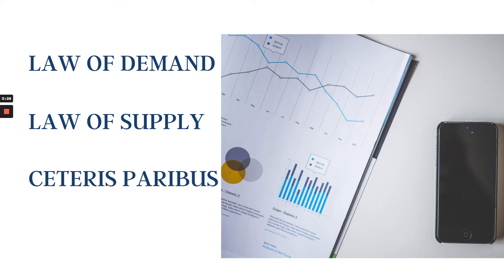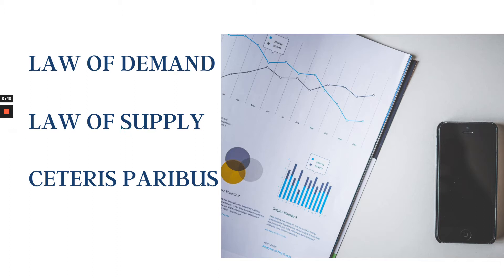So there is an opposite-direction relationship. When we say the law of supply, it says that if the price of the product increases, the quantity supplied will also increase — a directly proportional relationship. This is given under the ceteris paribus assumption, which means all other things are constant.